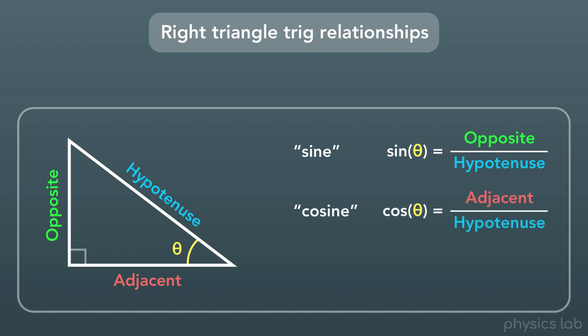Next is cosine, written as COS. Cosine of theta is equal to the adjacent side length divided by the hypotenuse side length. And last we have tangent, written as TAN. Tangent of theta is equal to the opposite side length divided by the adjacent side length.